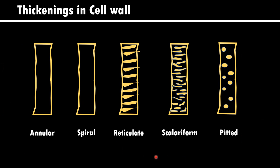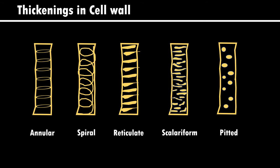Different plant materials show different types of thickenings. Young plants usually show annular thickenings, where the lignin deposition is annular in the axillary elements. After that, we can also see spiral arrangements in older stems, reticulate or network-like arrangements, scalariform or ladder-like arrangements, and pitted arrangements closely associated with the heartwood. This indicates that secondary depositions are increasing and the cell is becoming mature, no longer growing, and moving towards the death phase.